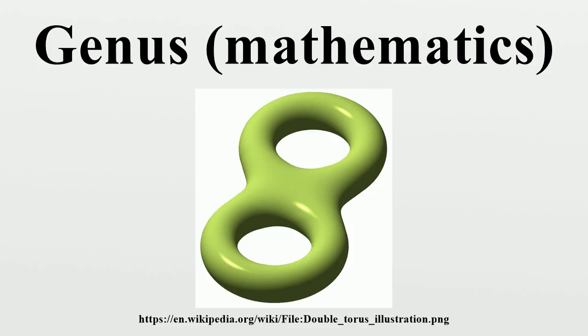Knot: The genus of a knot K is defined as the minimal genus of all Seifert surfaces for K. A Seifert surface of a knot is, however, a manifold with boundary, the boundary being the knot, i.e., homeomorphic to the unit circle.